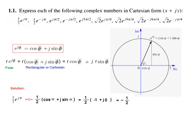For the first question, ½·e^(jπ): applying the formula, R is ½, and Phi is π. So we get ½·[cos(π) + j·sin(π)]. Using a calculator, cos(π) = −1 and sin(π) = 0, giving the final answer of −½. For the next part with a minus sign, −½·e^(jπ), the answer is similarly −½.